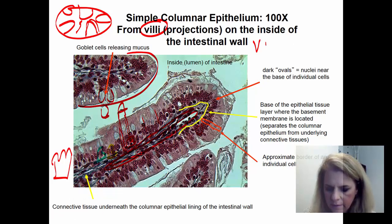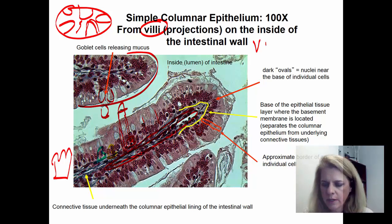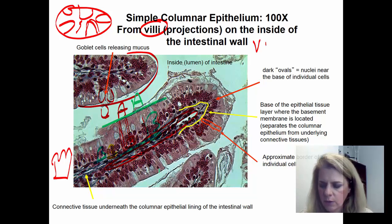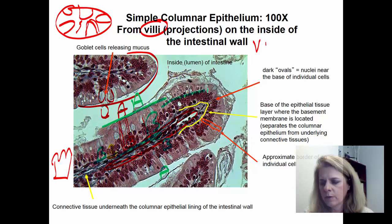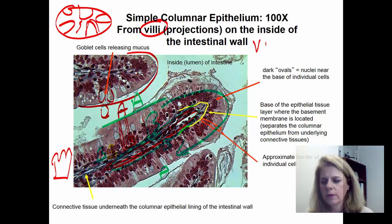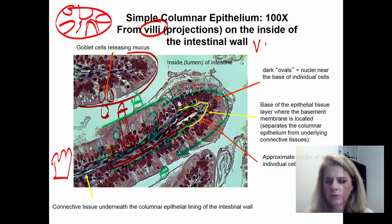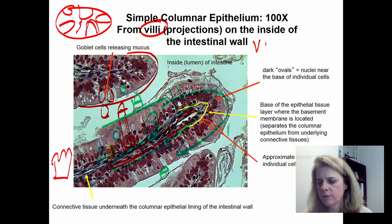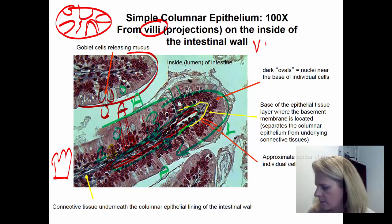On these villus projections, a layer of simple columnar wraps all the way around — so the apical side faces out toward the lumen and the basal side is down by the connective tissue at the center. Look for your tall straight cells with nuclei, look for goblet cells which appear as oval discs, and identify the basal and apical sides. You'll see a slide very similar to this on your exam, and anything listed on this slide is fair game for the lab test.